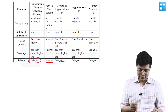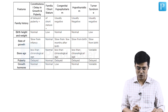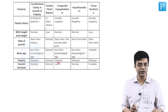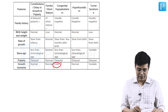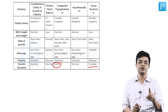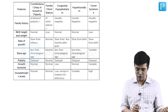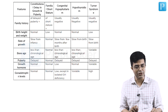Puberty will be delayed in constitutional delay in growth. It will be normal in familial short-stature and delayed in all three pathological varieties. Growth hormone will be normal in constitutional delay and in familial short-stature, but it will be low in congenital hypopituitarism because growth hormone is produced from the pituitary, and variable levels can be found in Turner syndrome.